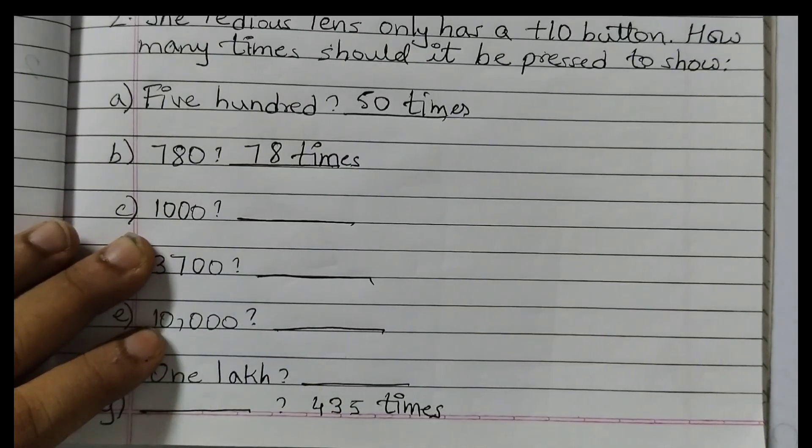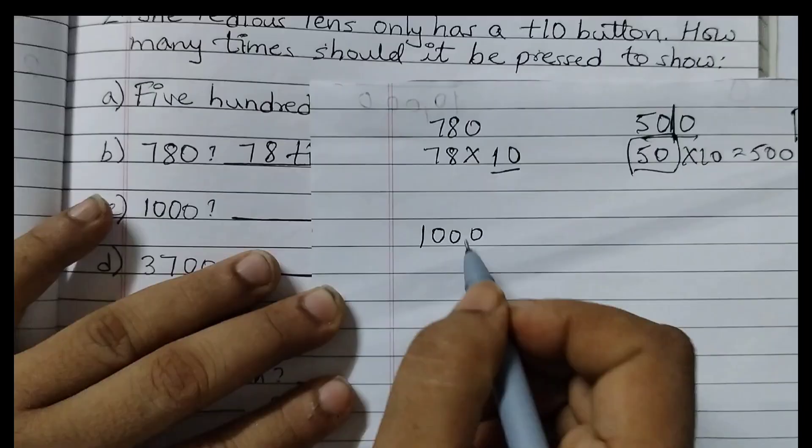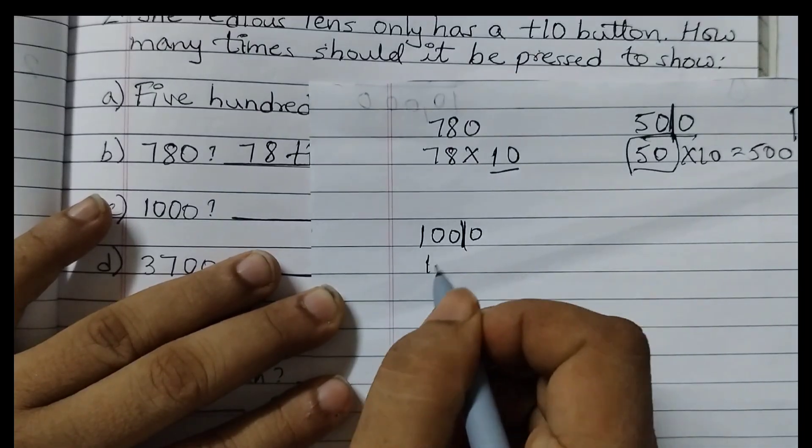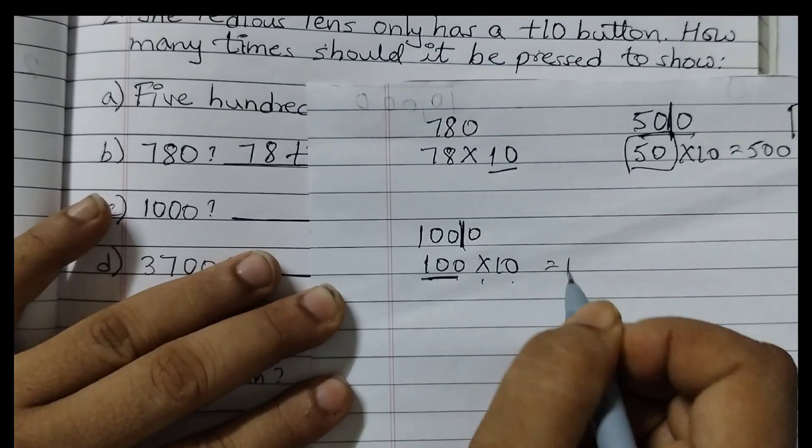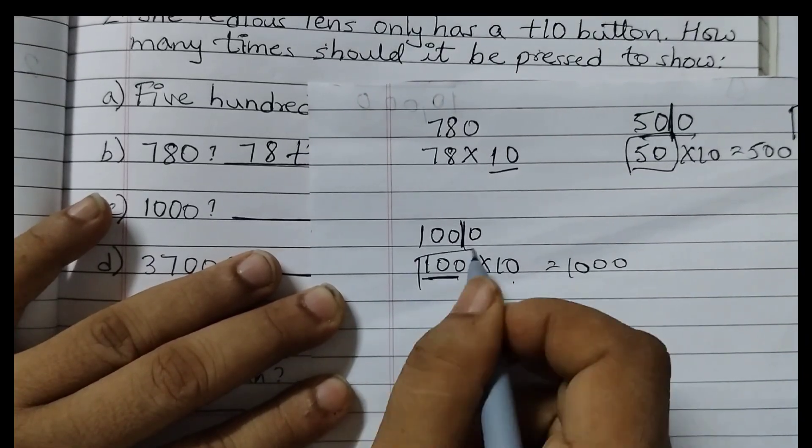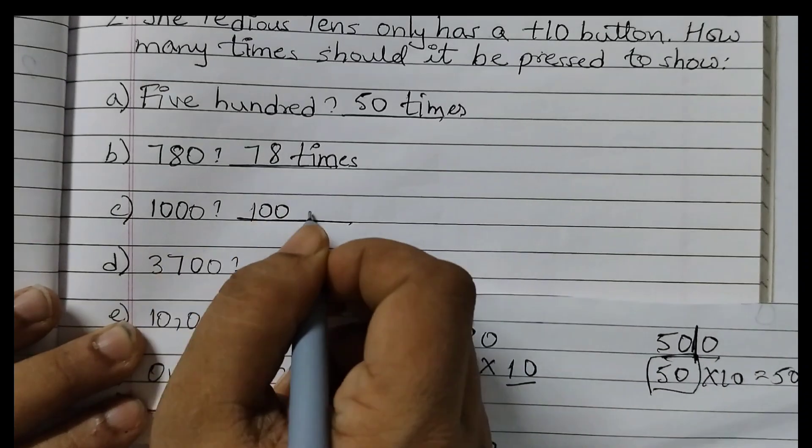Next one is 1000. So for 1000, if I just put a line here, 100 into 10. 100 times 10 will give 1000. So the answer is 100. 100 times.